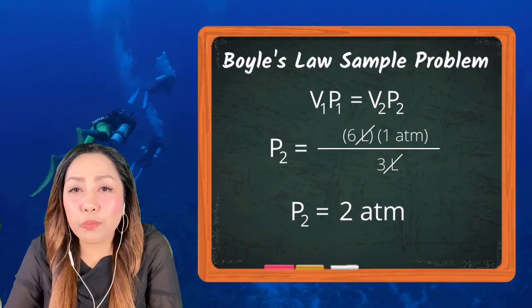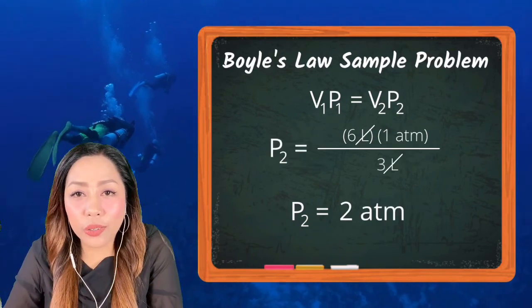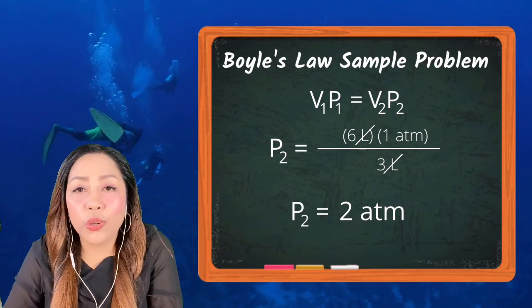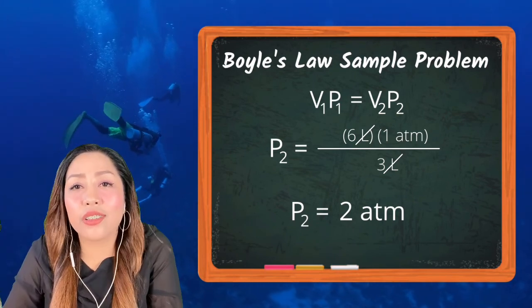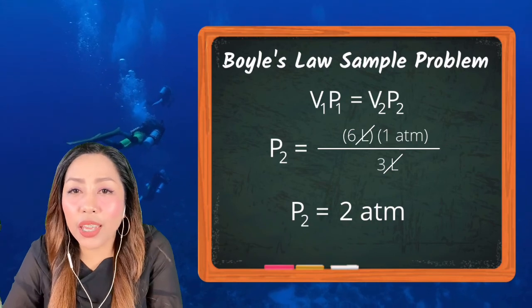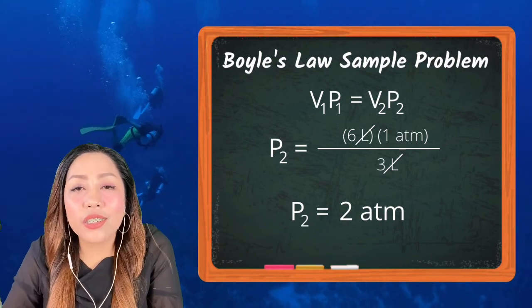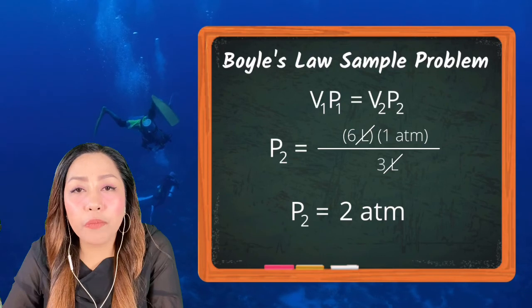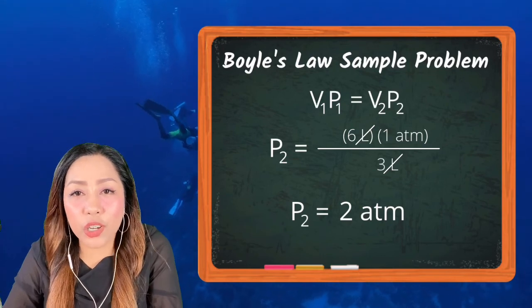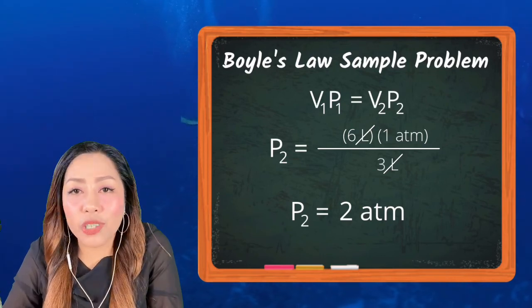So, the answer is P₂ is equal to 2. Now, when we cancel the unit's liters, the remaining unit will be atmosphere. So, the final answer will be P₂ or final pressure is equal to 2 atmosphere.